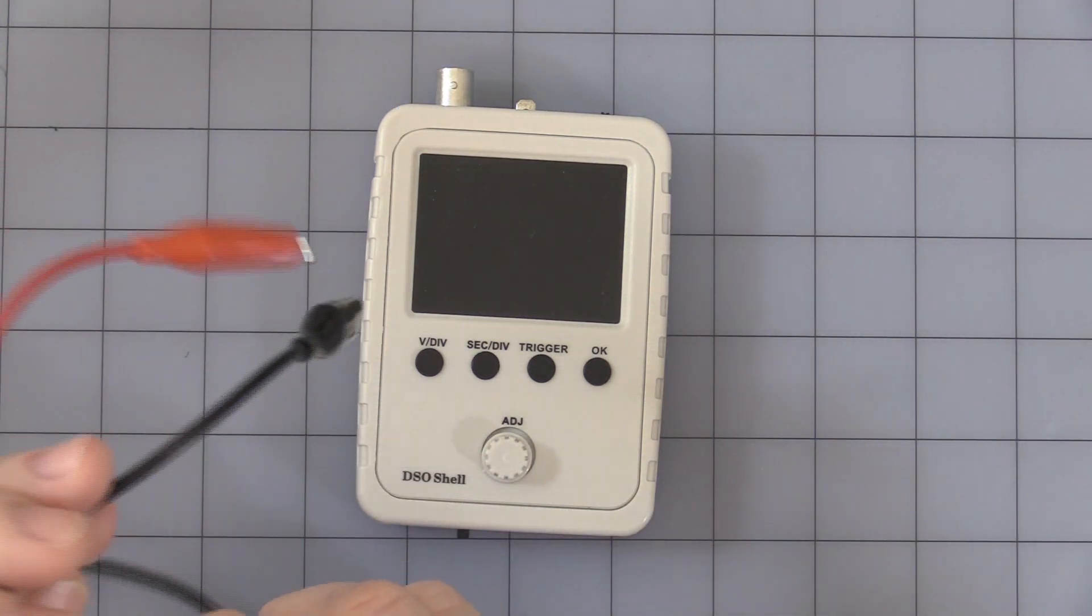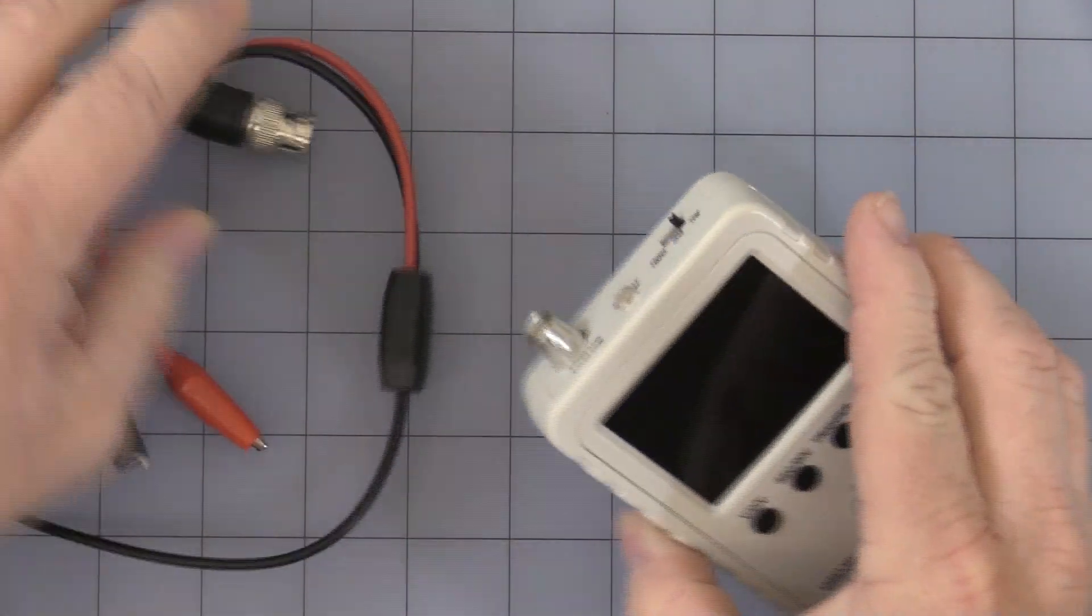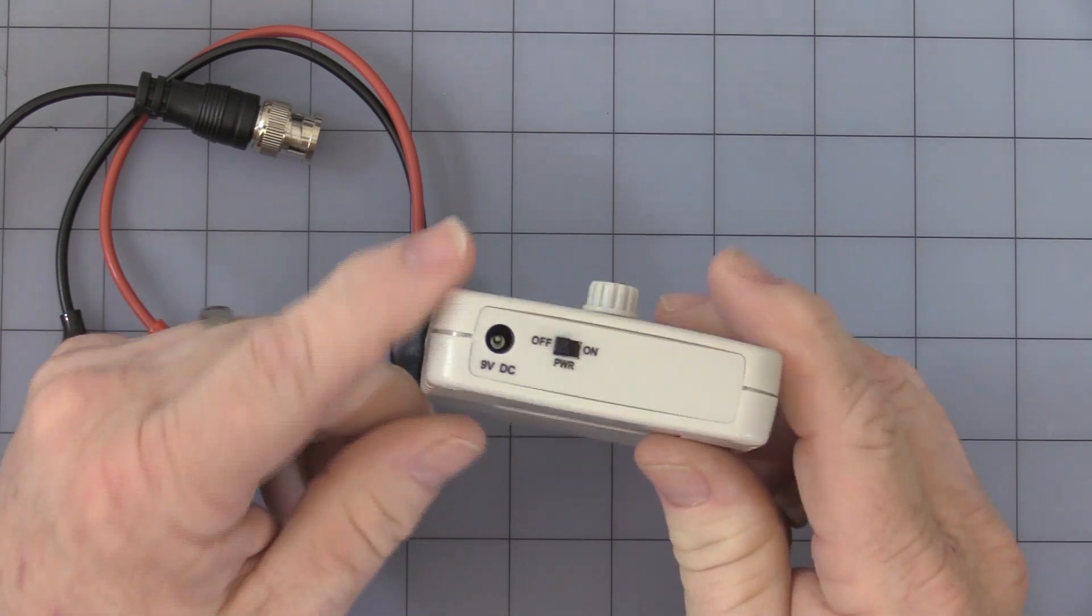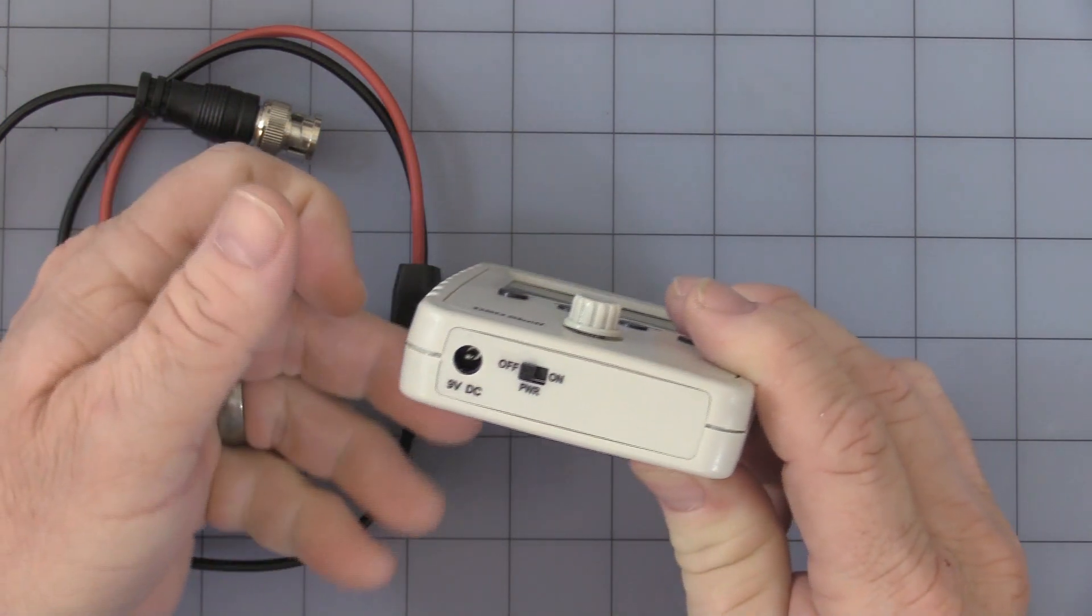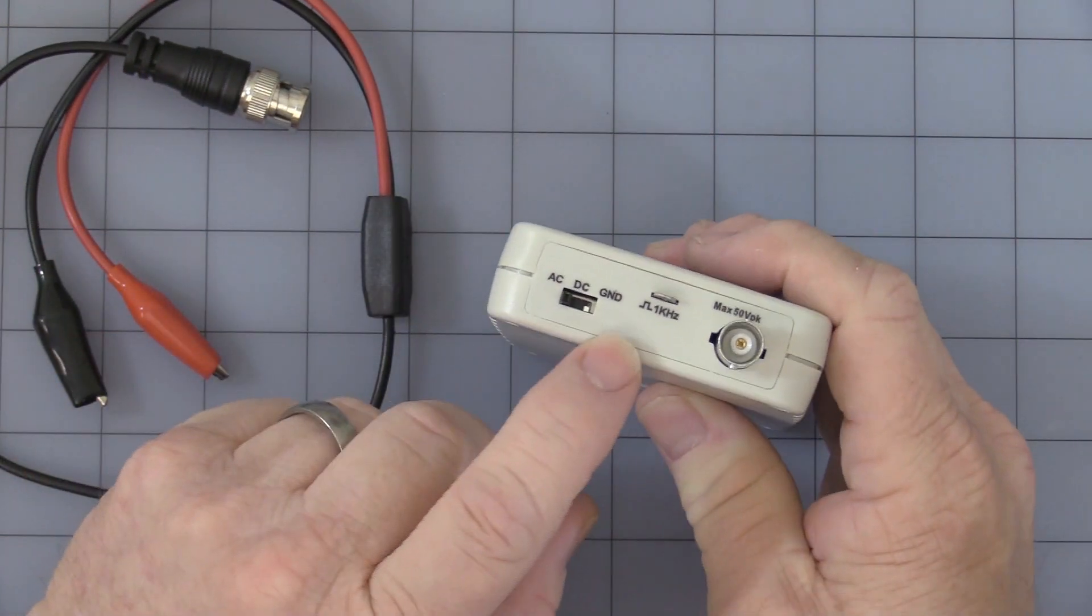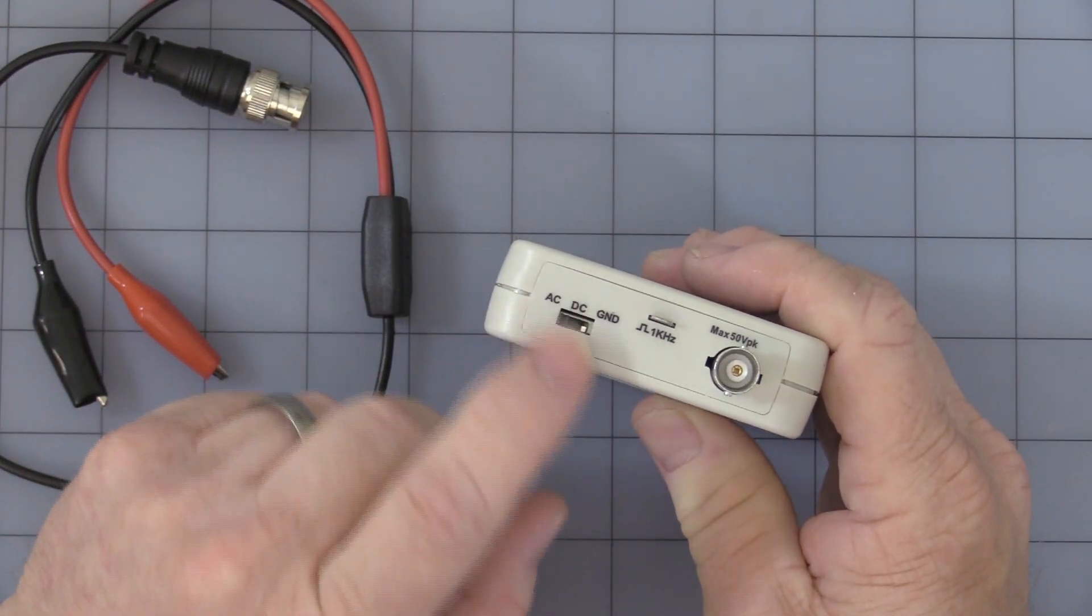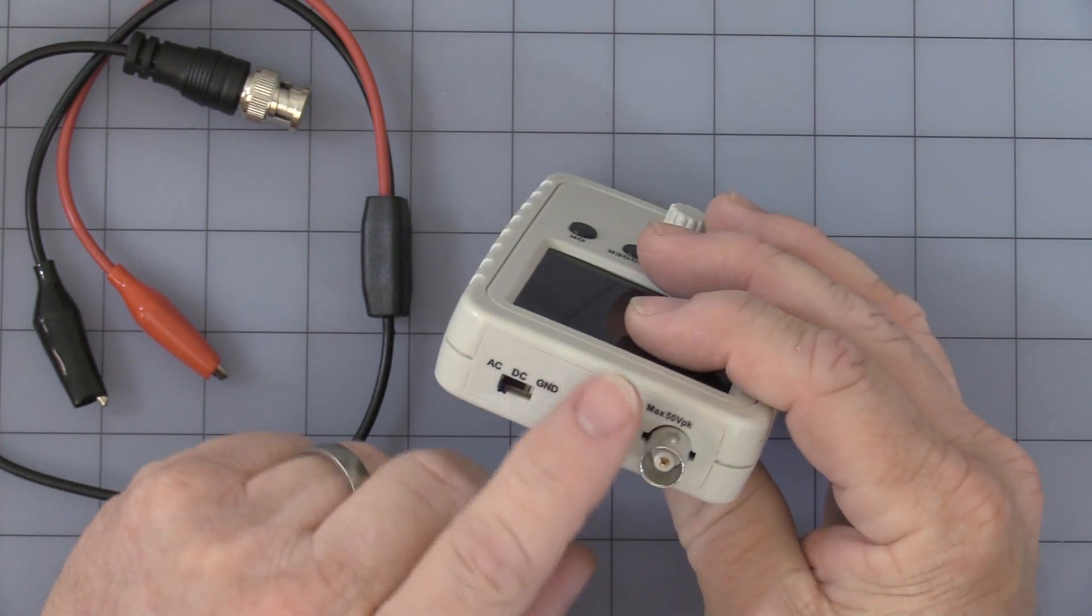Let me show you this first. The bottom is where you plug in the power, 9 volt DC. You have your on-off switch. On the top of it you have AC, DC, ground for your coupling switch.